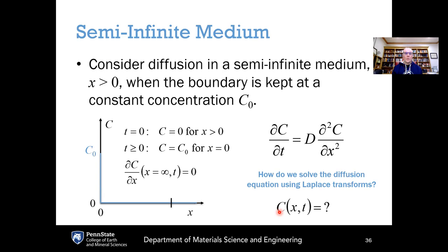Consider an example: concentration C0 at x equals zero, initial condition of zero concentration for all x greater than or equal to zero, boundary condition C equals C0 at x equals zero for all time, and the slope of concentration going to zero as x approaches infinity. Applying the Laplace transform to both sides of Fick's second law, the time derivative gives p·c-hat minus the initial condition, and the spatial derivative becomes the second derivative of c-hat with respect to x.